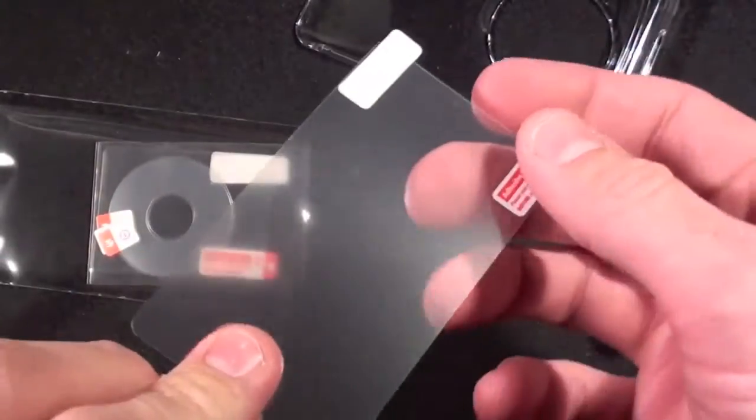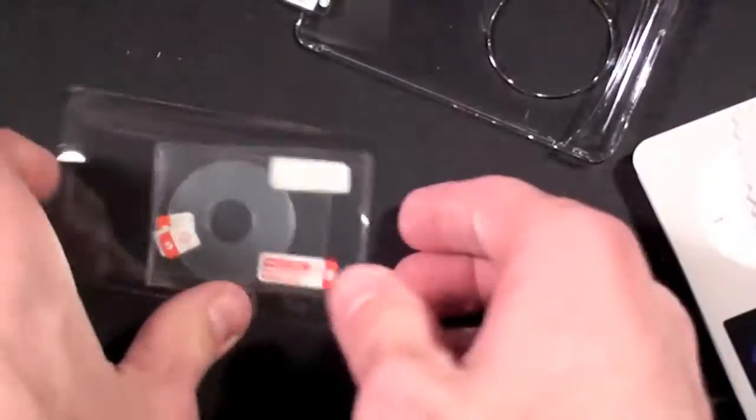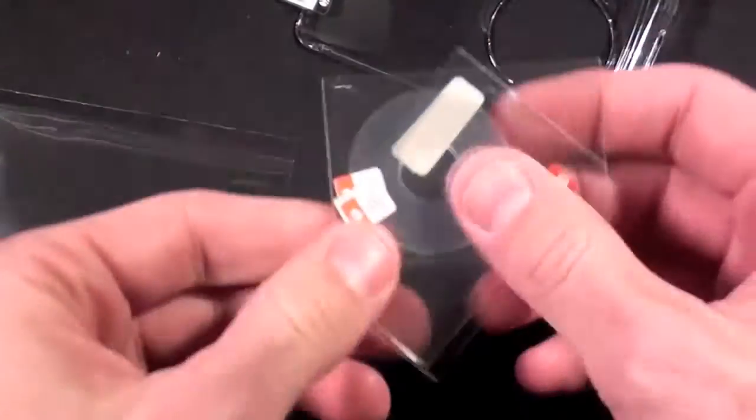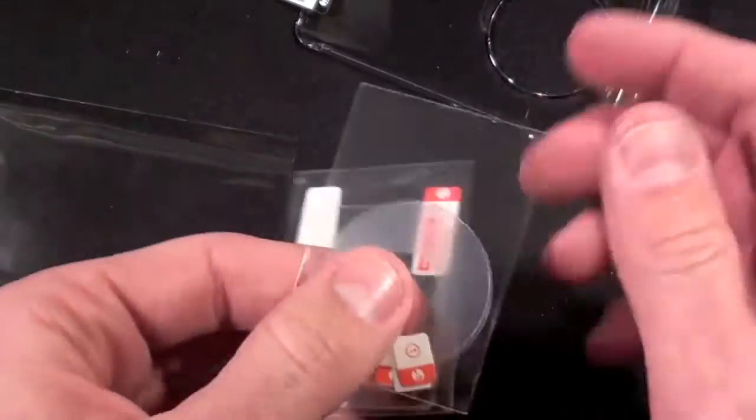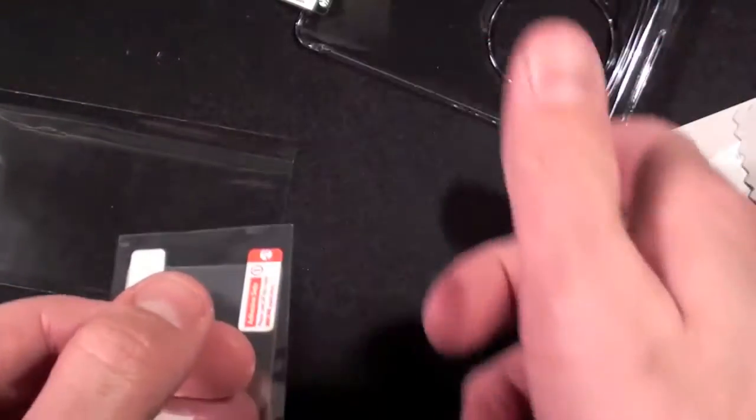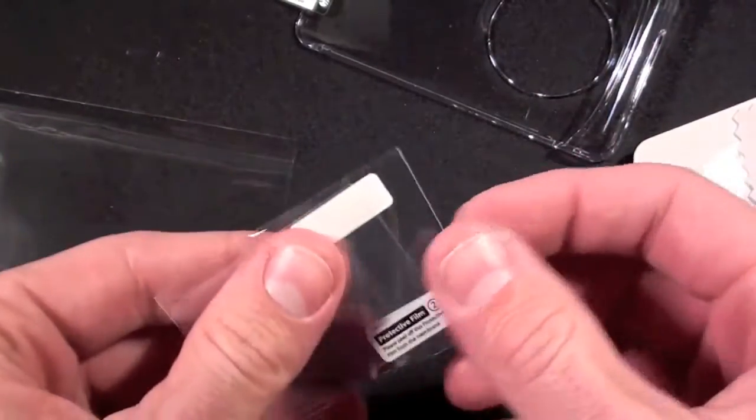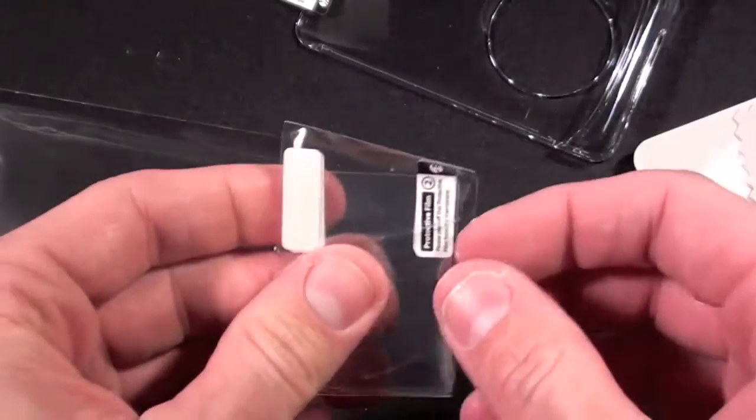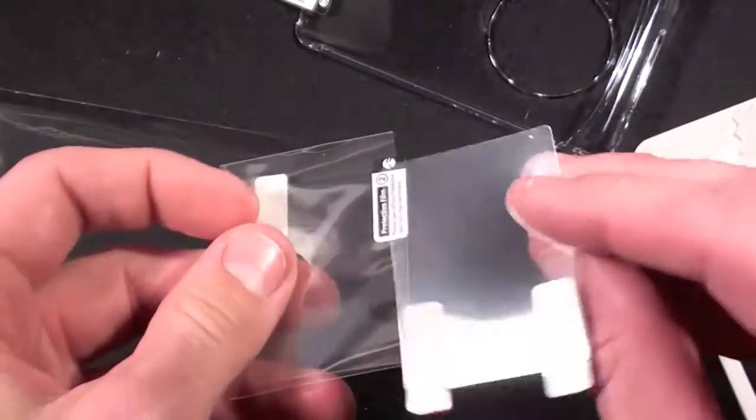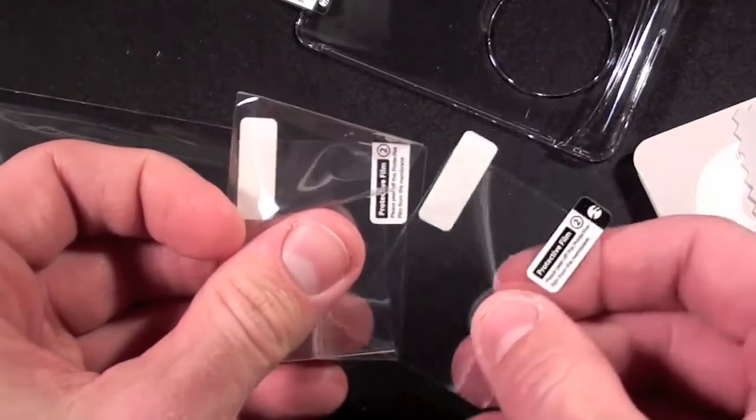We have one for the back to protect it from being scratched, and then we have two for the click wheel which helps it from wearing out. This is very useful because a click wheel, being matte plastic, does actually start to wear out and look shiny. And we have two for the glass front screen.